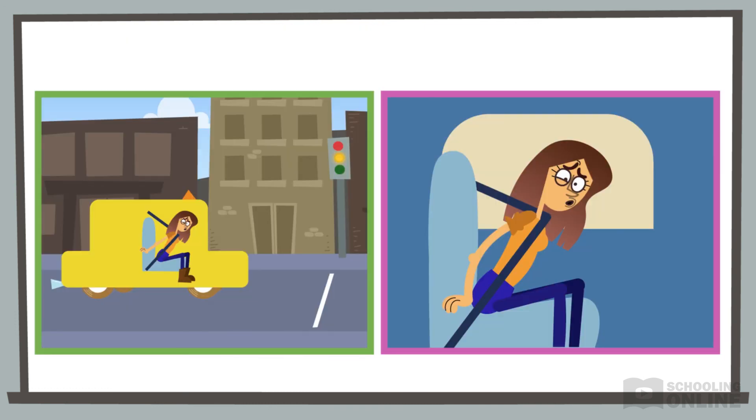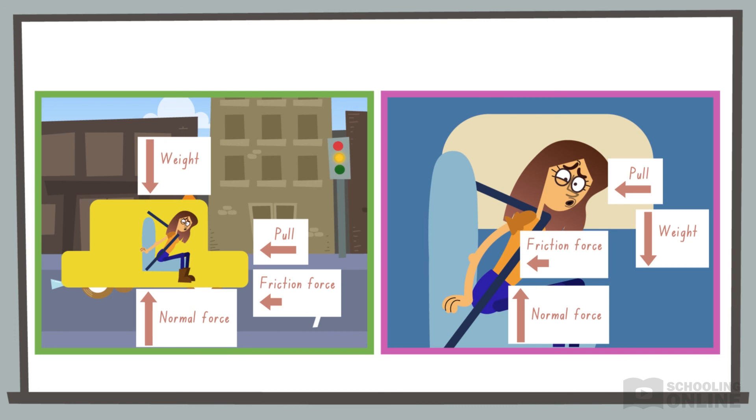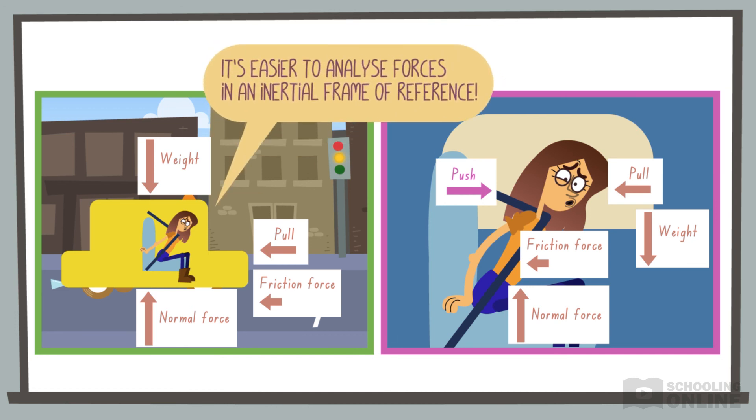To recap, real forces are observed in all frames of reference. On the other hand, fictitious forces only occur in non-inertial frames of reference, to counteract the frame's acceleration. For this reason, it is easier to analyse motion and forces in an inertial frame of reference.